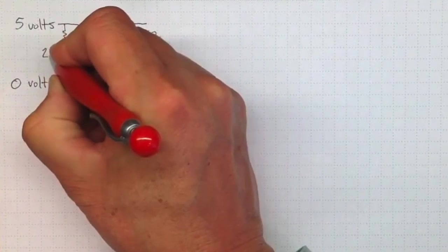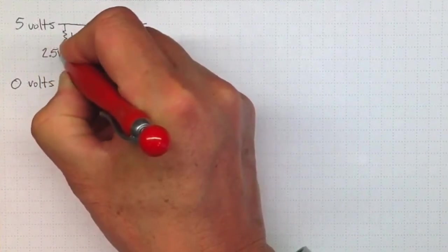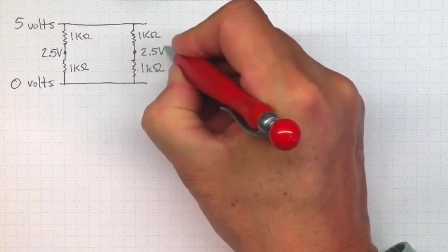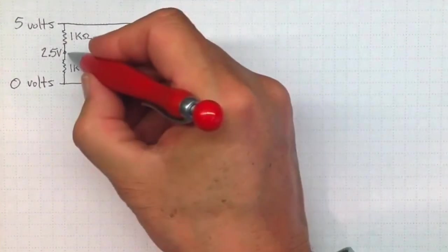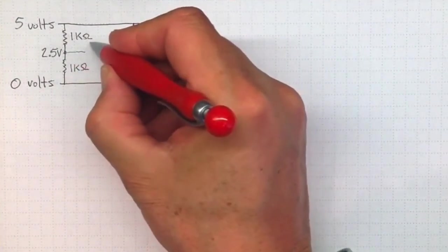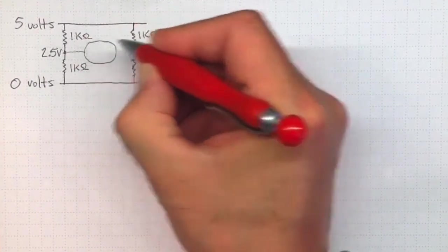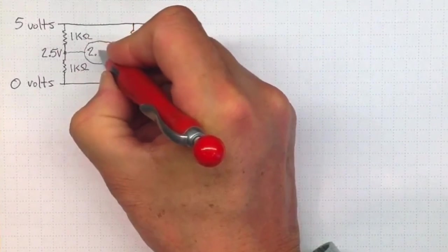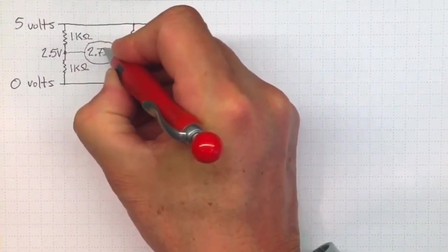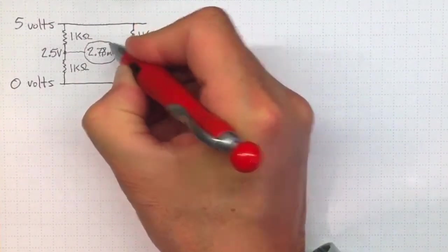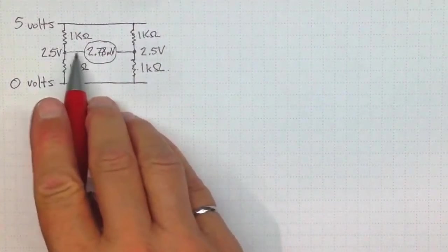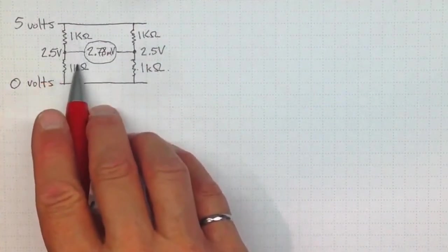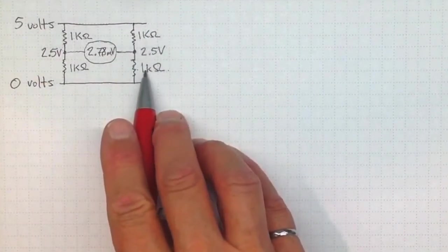So that this would be 2.5 volts, and this would be 2.5 volts. And yet when we measured the difference in between them, we found that that was about 2.78 millivolts.